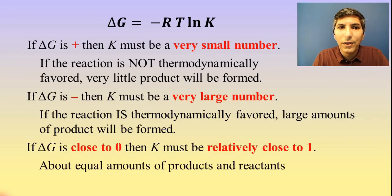Now, what if you have a delta G value that is close to zero? It probably won't be zero, but it might be close to it. Well, if that's the case, then our equilibrium constant must be fairly close to one. And as we learned in the equilibrium unit, that means that you'll have approximately equal amounts of products and reactants.